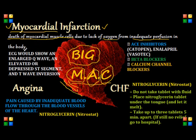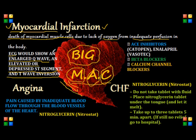Let's look at the diagnostic test results for MI, which is essential to know for the NCLEX exam. The EKG in a patient with an MI would show an enlarged Q wave, and there would be either an elevated or a depressed ST segment, and then the T wave would be inverted, which is what we call a T wave inversion. So again, an enlarged Q wave, an elevated or depressed ST segment, and a T wave inversion.